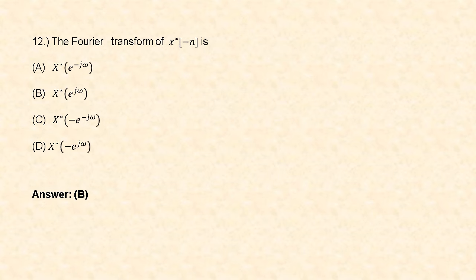Next question: the Fourier transform of x*(−n) is: option A: X*(e^(−jω)), option B: X*(e^(jω)), option C: X*(−e^(−jω)), option D: X*(−e^(jω)). The Fourier transform of x*(−n) is X*(e^(jω)), so option B is correct.